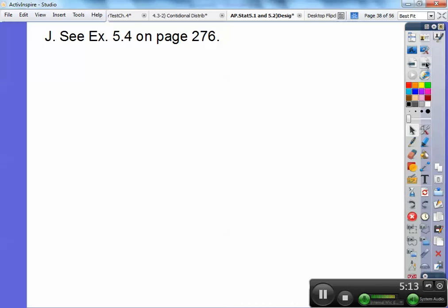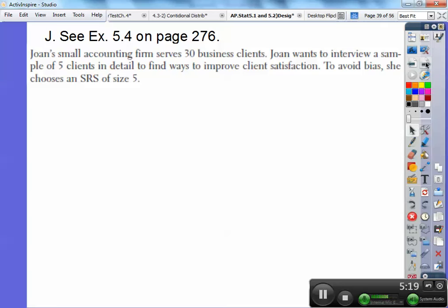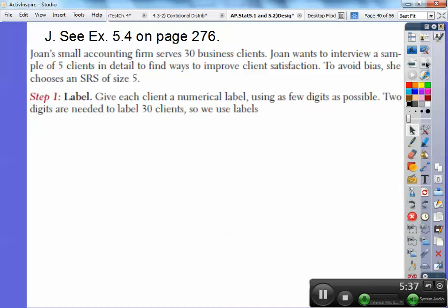So, Section J. Here's we're going to see Example 5.4 on page 276. Joan's small accounting firm serves 30 business clients. Joan wants to interview a sample of five clients in detail to find ways to improve client satisfaction. To avoid bias, she chooses an SRS of size 5, and we're going to use Table B in the back of the book. So, step one, give each client a numerical label using as few digits as possible. Two digits are needed to label 30 clients because 30 is a two-digit number. So, the first client is going to be client 01. So, we're going to use the labels 01, 02, 03, blah blah blah, all the way up to 29 and 30. And that will represent our 30 of them.